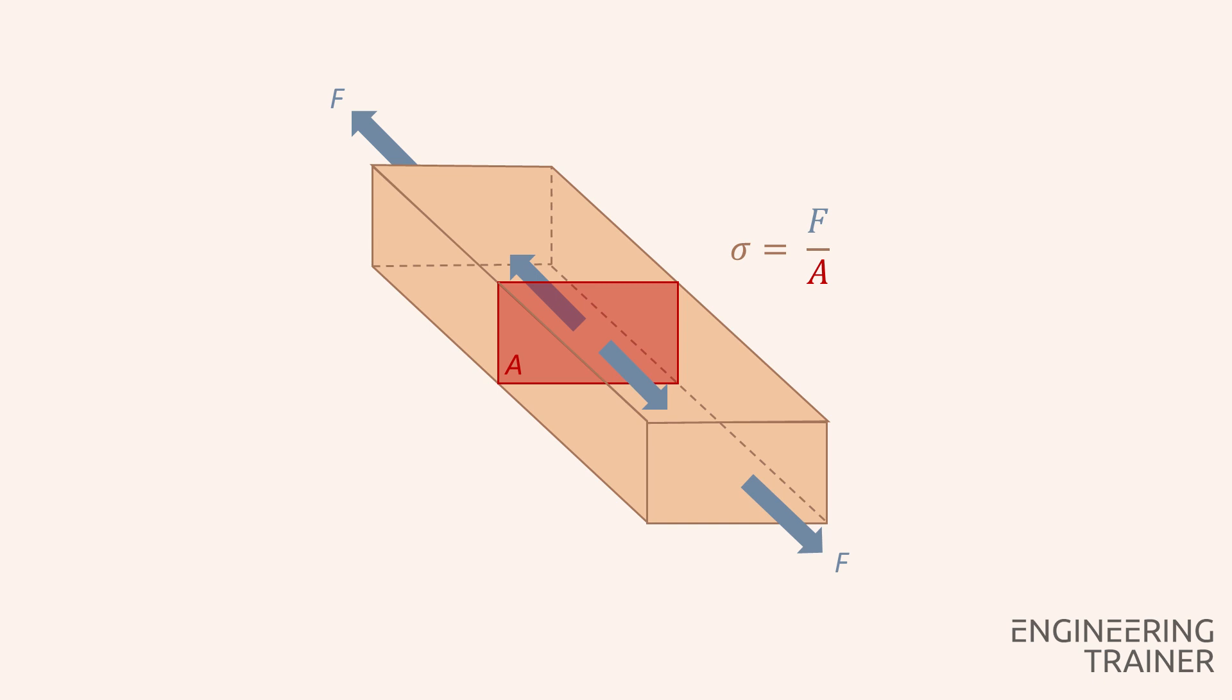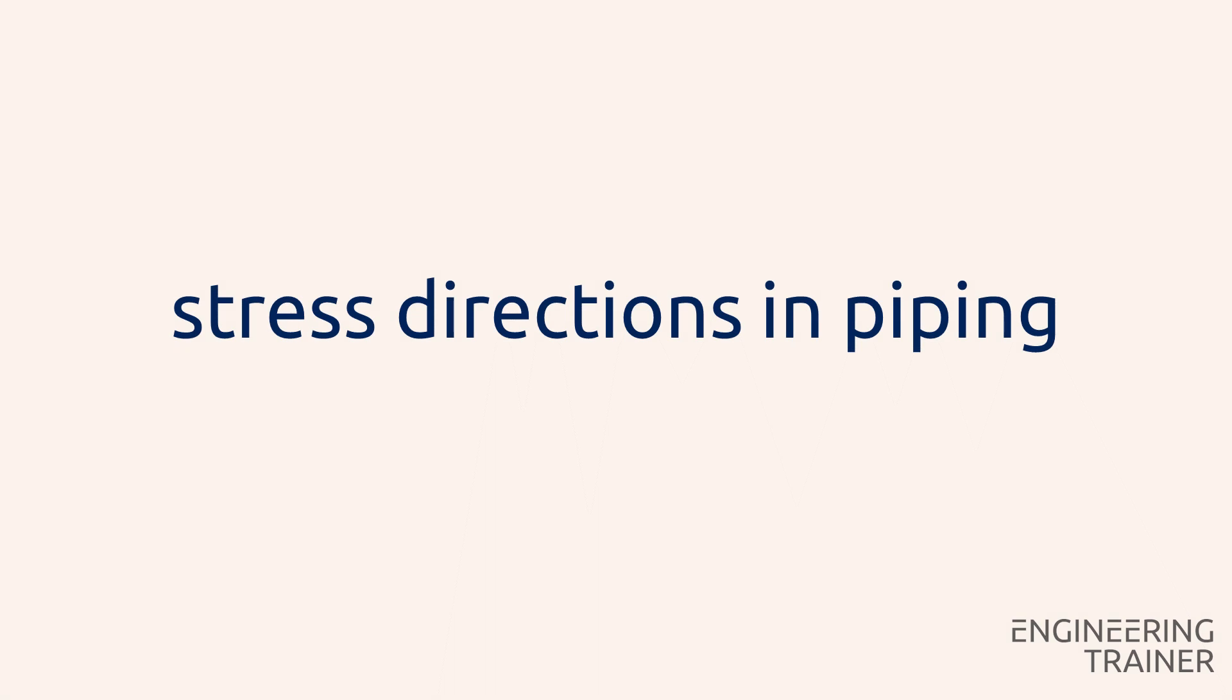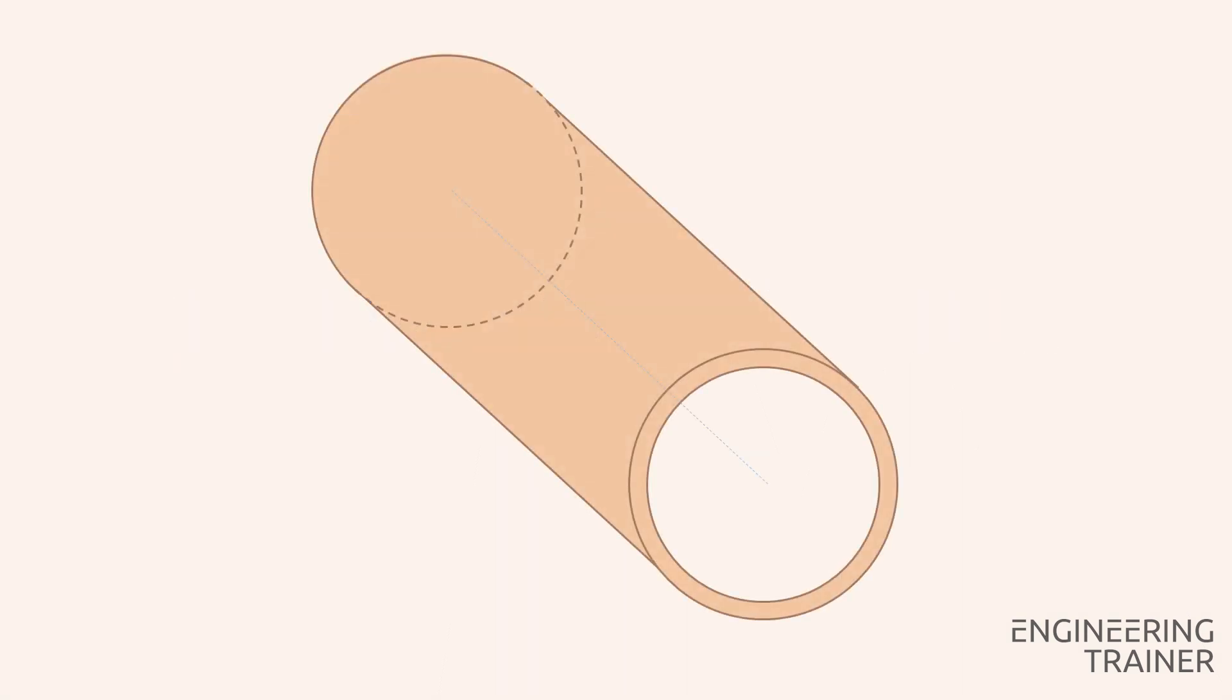Now that we've defined normal stresses in a rectangular beam, let's evaluate the main stress directions in a piece of pipe. In a pipe, the normal stresses are based on the cylindrical coordinates. First, there's the axial stress resulting from forces in the axial direction applied to the pipe.